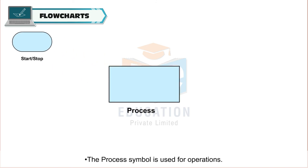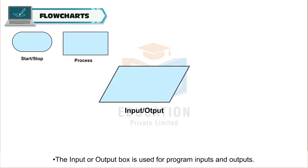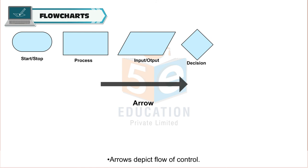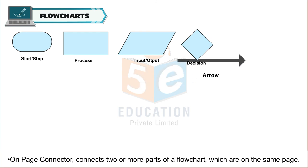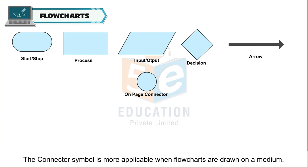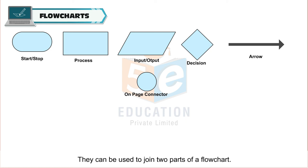The process symbol is used for operations. The input or output box is used for program inputs and outputs. The decision symbol is used for decision statements. Arrows depict flow of control. The on-page connector connects two or more parts of a flowchart which are on the same page. The connector symbol is more applicable when flowcharts are drawn on a medium and can be used to join two parts of a flowchart.